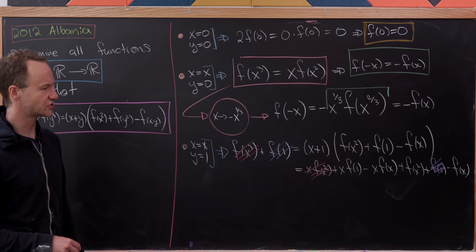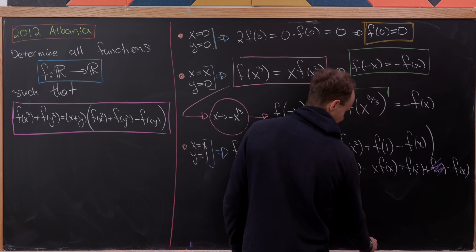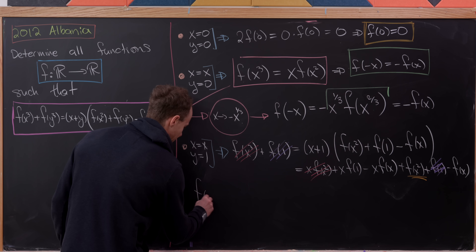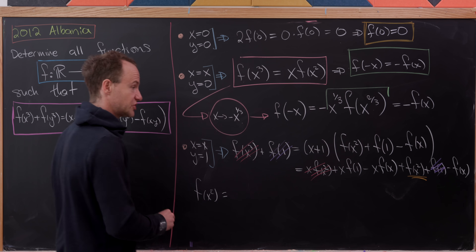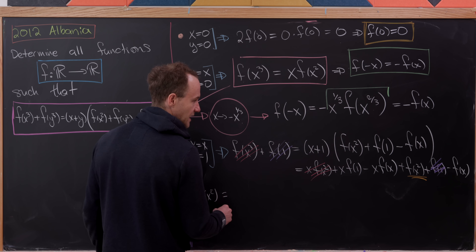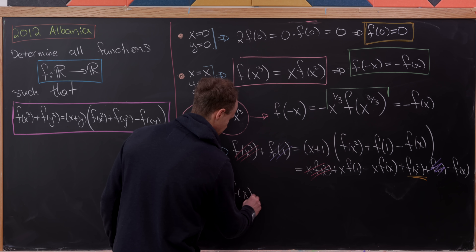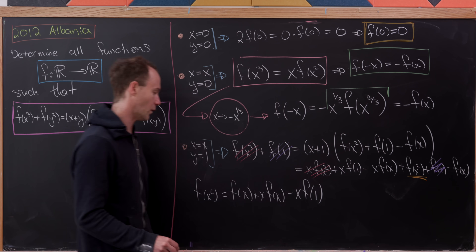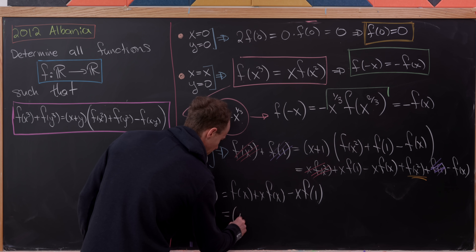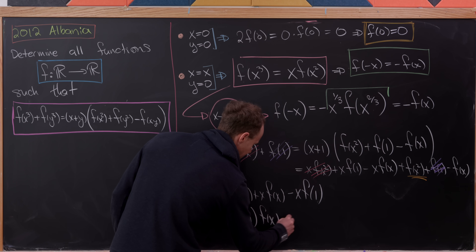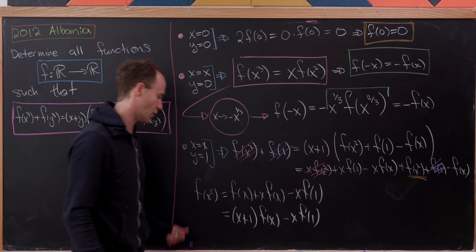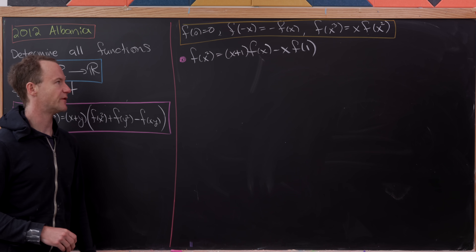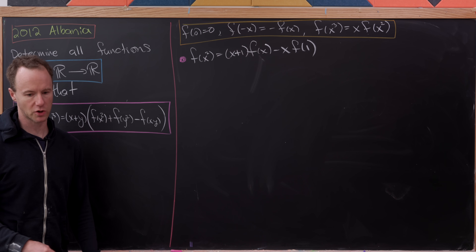It's logical to solve this for f(x²). Doing so gives f(x²) = f(x) + x·f(x) - x·f(1), which we can write as f(x²) = (x + 1)·f(x) - x·f(1). We've now expressed f(x²) in terms of lower-order quantities using the functional equation with y = 1.